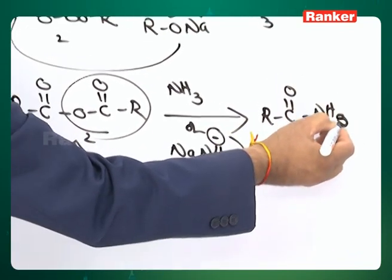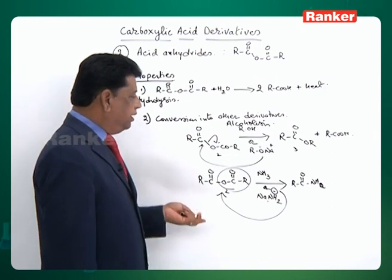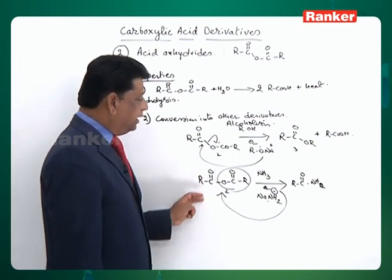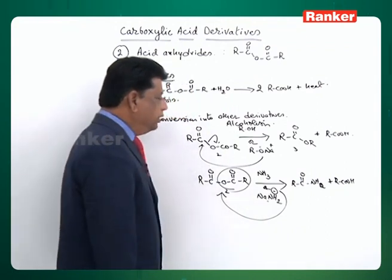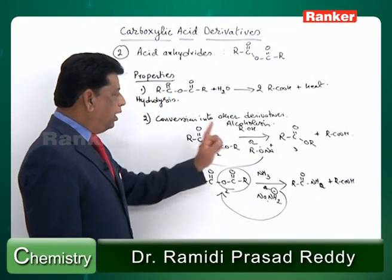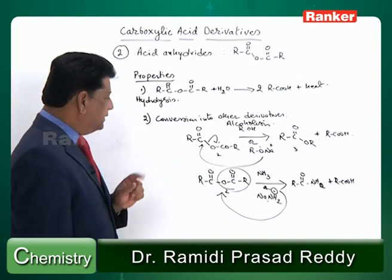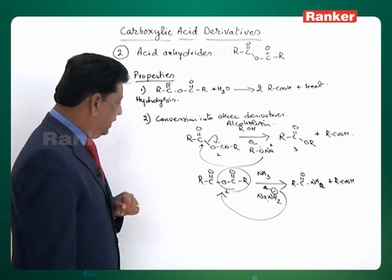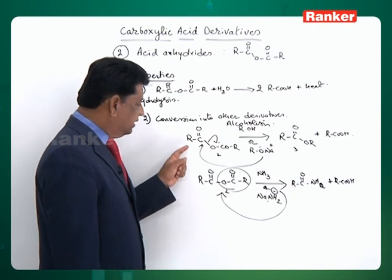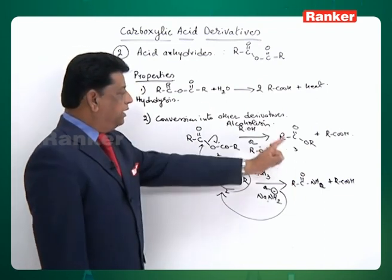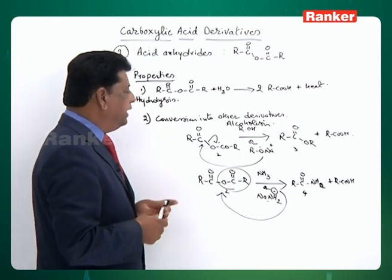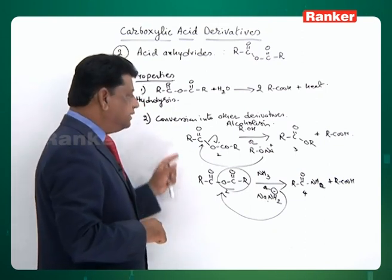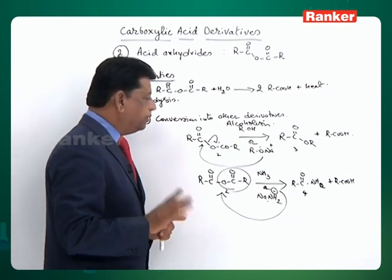Anhydrides can also be converted into amides by adding ammonia or salts like sodium amide or potassium amide. The NH2 minus replaces the acetoxy group and you get amide formation. If you add ammonia directly, first a salt may form, but finally the ammonia breaks it — one side gives the acid, the other side the amide. This is called the aminolysis reaction. So anhydrides undergo both alkoholysis and aminolysis, converting from number 2 to number 3 and number 4 in the derivative series.